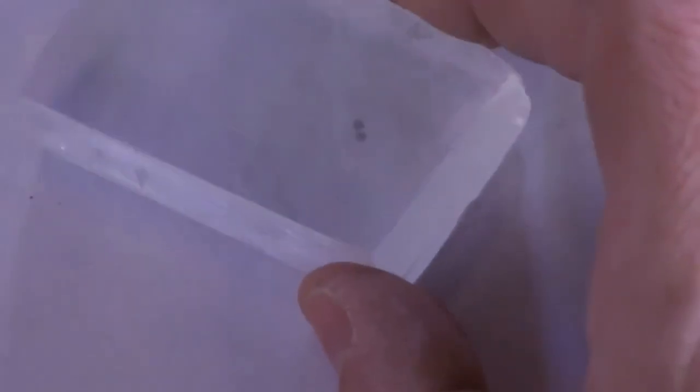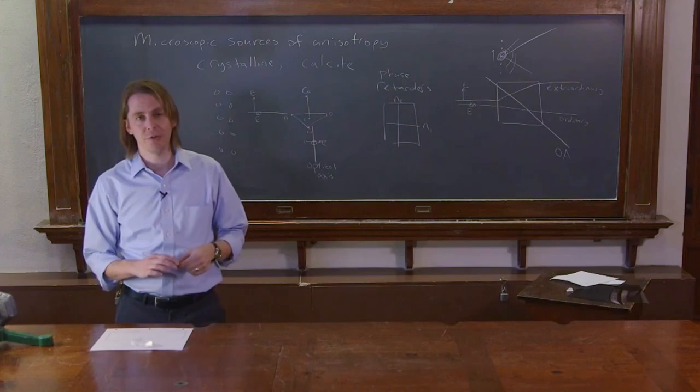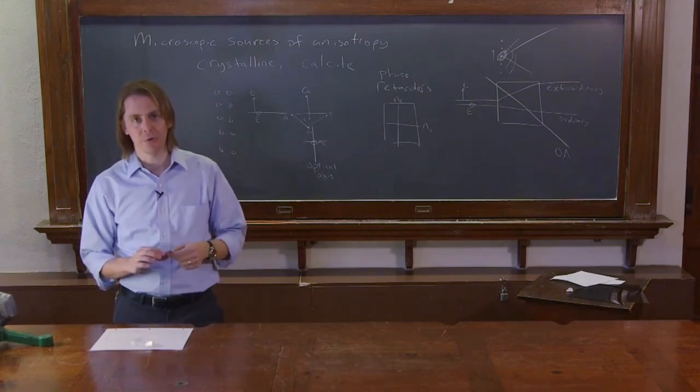So you can see this extraordinary optical property in calcite is really just due to anisotropy of the crystal structure.